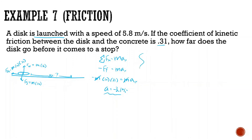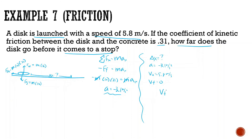Using kinematics to find how far the disk goes: we know displacement is unknown, acceleration is negative 3.1 m/s², initial speed is 5.8 m/s, and final velocity is 0. Using the formula: final velocity squared equals initial velocity squared plus 2a times displacement. Zero equals 5.8 squared plus 2 times negative 3.1 times displacement. Solving: 5.8 squared divided by 6.2 gives us 5.43 meters.